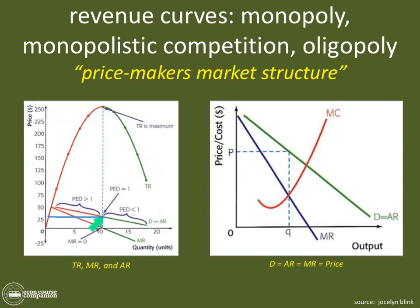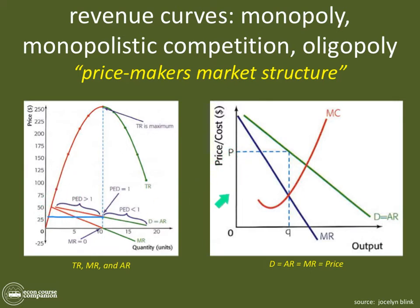Moving forward, when we put cost curves onto these diagrams, we won't always show all curves. The total revenue curve, for instance, won't always appear because it would make the graph more complicated. Similarly, the revenue-maximizing point where MR crosses zero won't always be drawn in unless specifically asked for, to avoid adding confusion to the diagram.